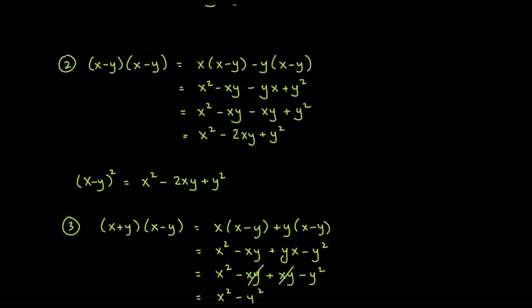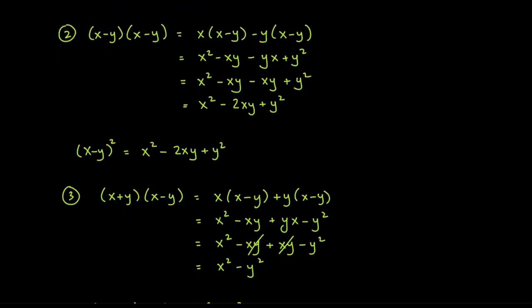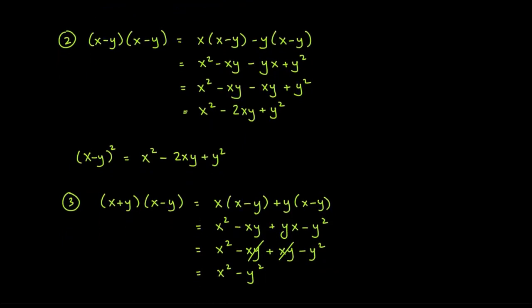The formula for (x − y)² works very similarly. We write x − y twice and multiply. We split the x into (x − y) and the negative y into (x − y) as well.